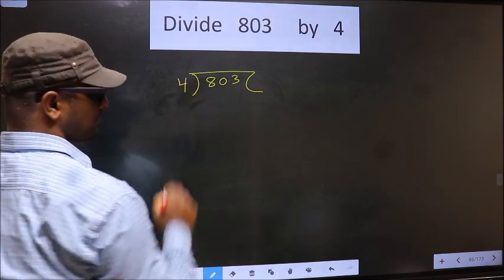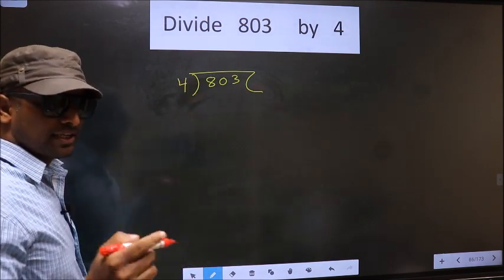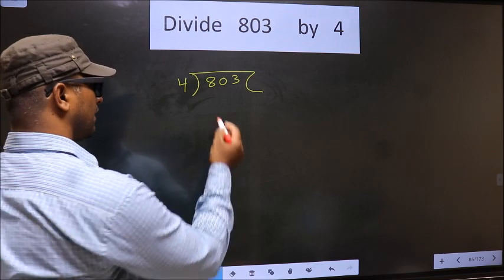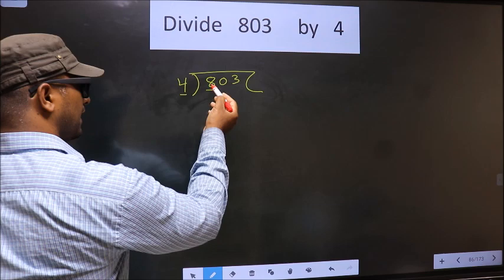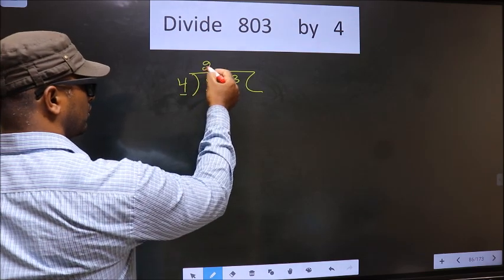Divided by 4. Now here we have 8, and here 4. When do we get 8 in the 4 table? 4 times 2 is 8.